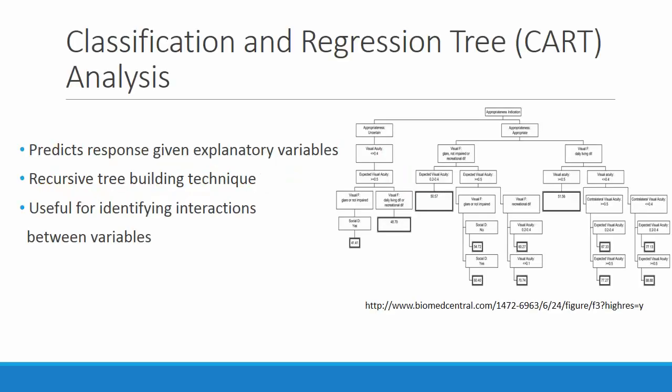Before we explain our analysis, we will first give you an overview of CART analysis. CART analysis, or Classification and Regression Tree, is a recursive tree-building technique that is used to identify interactions between explanatory variables. There are four main components: tree building, tree stopping, pruning, and testing. To understand CART, it is essential to understand these four techniques.